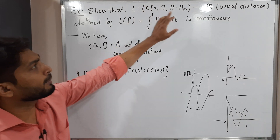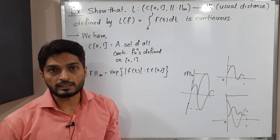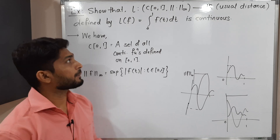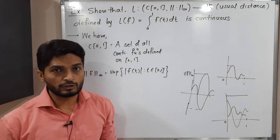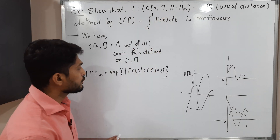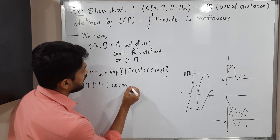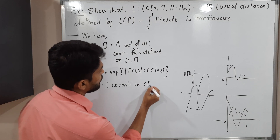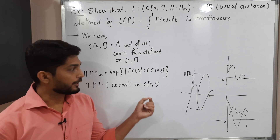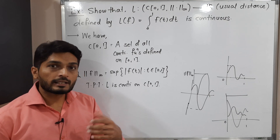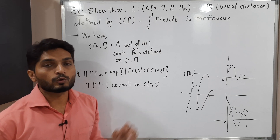L is defined from this domain to ℝ with the usual distance. We are familiar with the usual distance: d(x, y) = |x − y|. L of f is defined with the help of integration, and we have to prove that L is continuous on this domain — that is, continuous on C[0,1]. This means L is continuous at each and every point of this set, which is a collection of functions, so L is continuous at each and every function of C[0,1].